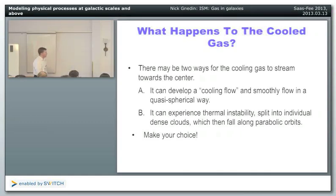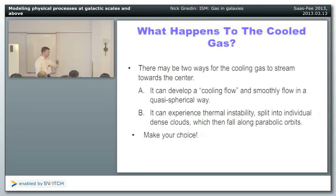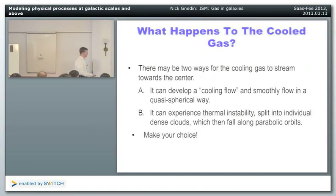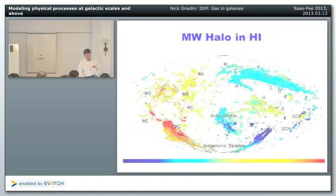There are at least two different scenarios for how gas falls toward the center. First, it can develop a cooling flow, just like in galaxy clusters, where the gas cools and gradually flows toward the center in a quasi-spherical, smooth way. Alternatively, it can experience thermal instability and instead of flowing smoothly, it fragments into small clouds, and each of those clouds — like raindrops — falls onto the galaxy.